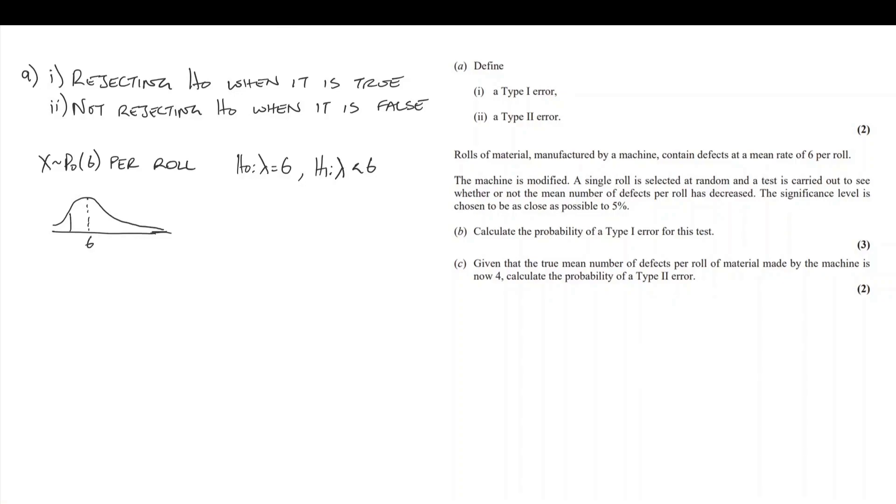Poisson distribution as always has positive skew. Here's the expectation at the peak, and we're looking for this critical region. I need a value of a where the probability that it's less than or equal to a is as close as possible to 0.05. We're looking for the probability where x is less than or equal to a being as close as possible to 0.05, the significance level we were given.